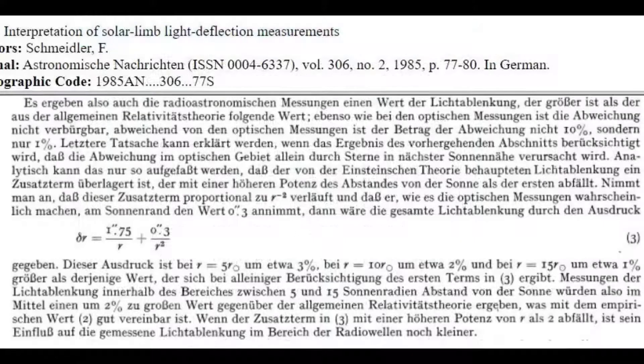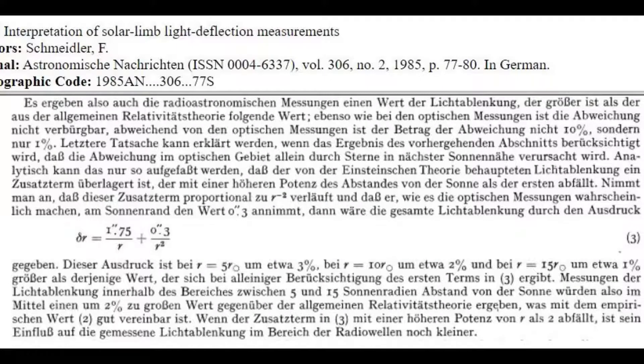In 1985, Schneider proposed an empirical correction to the Einstein formula. The theoretical value was thereby increased by 17%. The violation of the theory of relativity takes place especially in the immediate vicinity of the Sun.